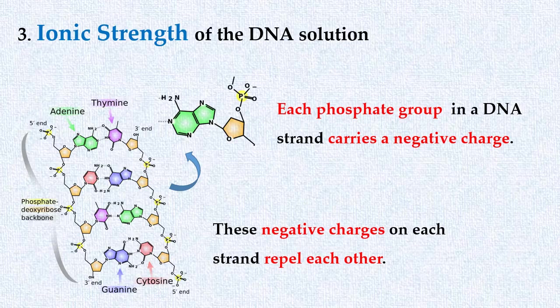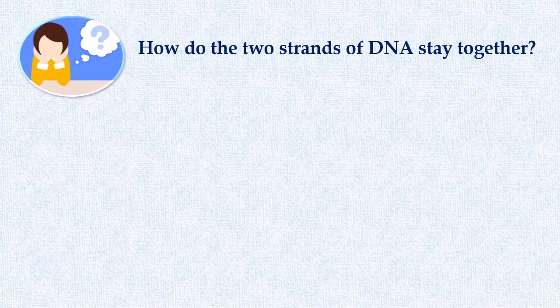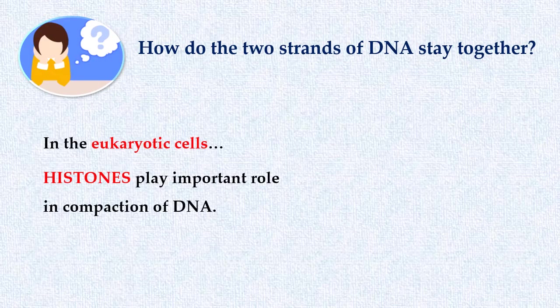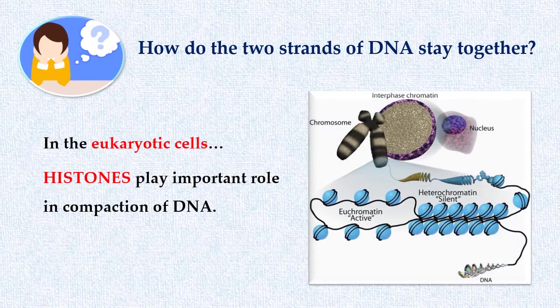Now question is, if this is so, how these two strands of DNA stay together? In eukaryotic cells, proteins known as histones play important role in compaction of DNA within the nucleus of the cell. These proteins are rich in basic amino acids. Their positive charge helps in neutralizing the negative charges on DNA molecule.